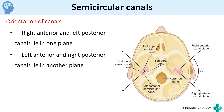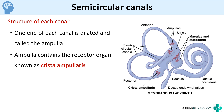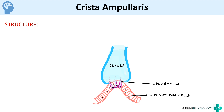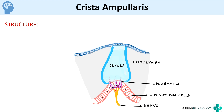At the end of each semicircular canal there is a dilated part called the ampulla, which contains the receptor organ known as the crista ampullaris. The crista ampullaris consists of hair cells and supporting cells. The cilia of the hair cells are embedded in a gelatinous structure called the cupula. On either side of the cupula there is endolymph, so whenever there is a change in the orientation of the cupula the hair cells are activated and impulses are transmitted via the nerve fibers innervating these hair cells.